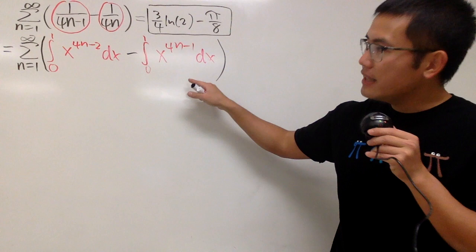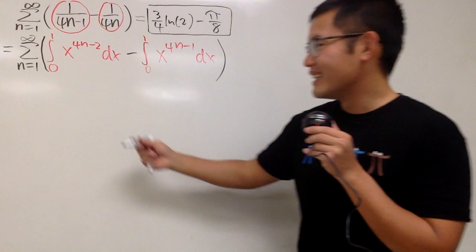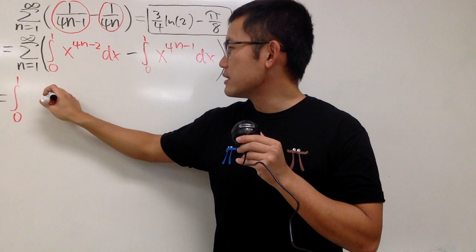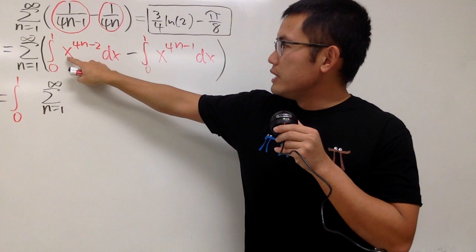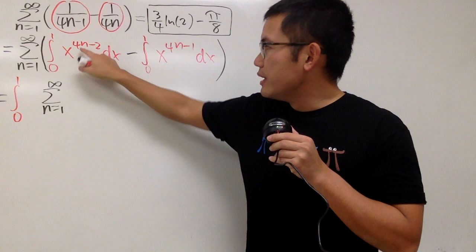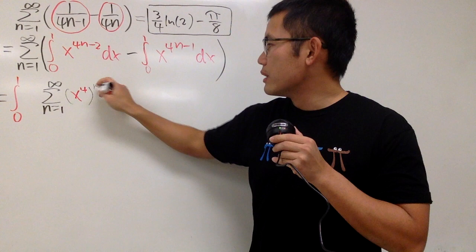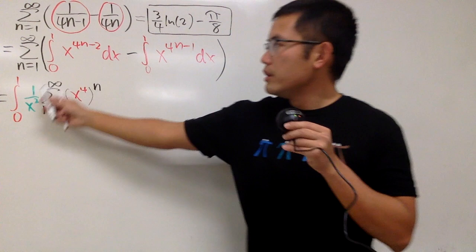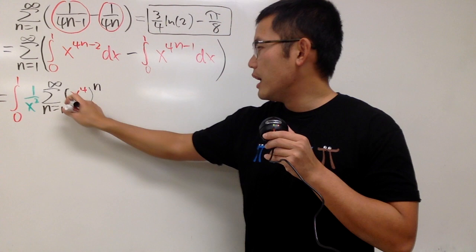Both of the integrals are going from 0 to 1, so I will just put down one integral symbol from 0 to 1. And then we'll do the summation of this. Sum goes from 1 to infinity. For this part, we have x to the 4n minus 2 — let's play around with the exponent. I will write it as x to the 4th power raised to the nth power, so that gives us x to the 4n. Then for the minus 2, I will just put down 1 over x squared. This is actually a geometric series — the best friend situation.